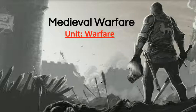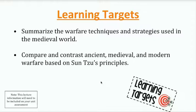Hi and welcome back to another one of our online lectures here in History Through Film. Today we're going to continue our unit on warfare by looking at medieval warfare. We've got two learning targets we're going to seek to answer here today. The first one says: summarize the warfare techniques and strategies used in the medieval world. We're going to look at all sorts of good stuff — different tactics, different fortifications, different weapons used in the medieval world.